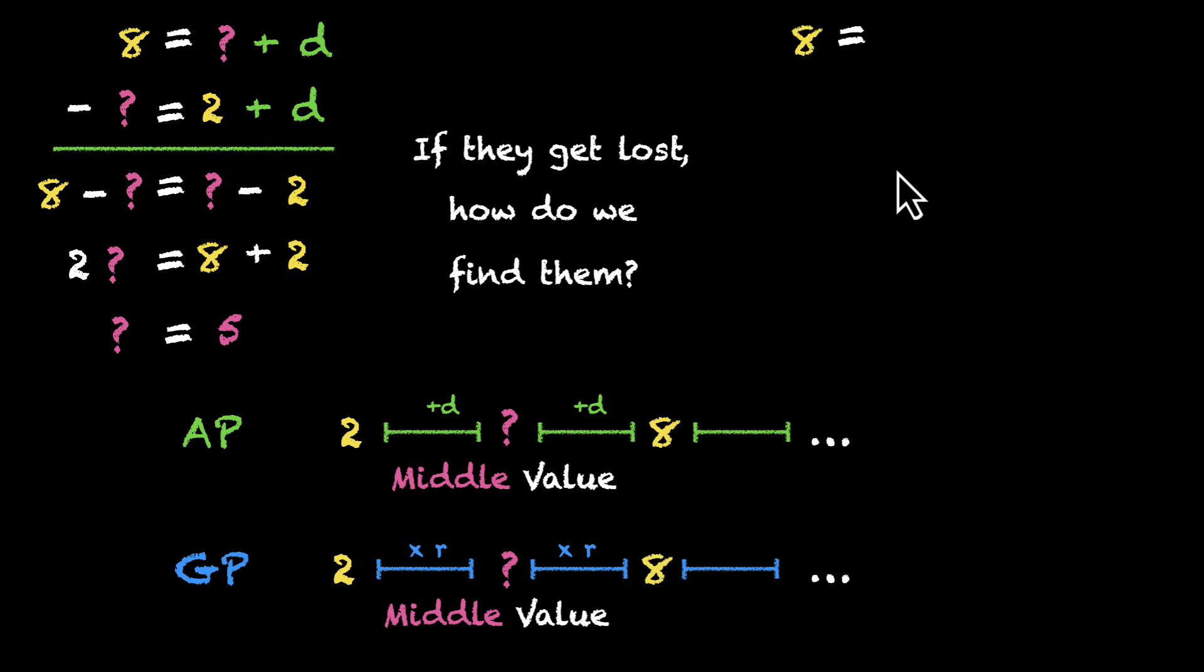We get 8, that's equal to the middle value times r. And this middle value is equal to 2 times r. Again, we don't need r. So let's divide. This will give us 8 by question mark. That's equal to the question mark by 2. And if you cross multiply, you get the middle value squared equals 8 times 2, that's 16, which means the middle value is the square root of 16, which is 4.